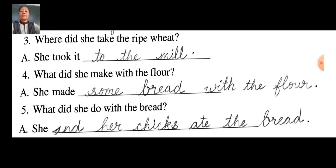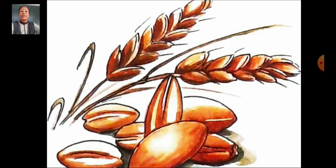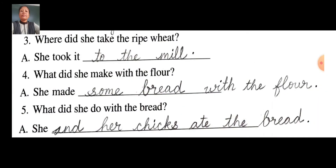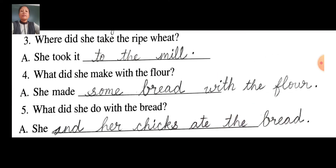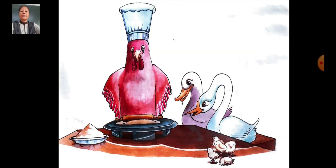Once again, let me repeat. Third question: Where did she take the ripe wheat? She took it to the mill. Fourth question: What did she make with the flour? She made some bread with the flour. Fifth question: What did she do with the bread? The little red hen and her chicks ate the bread.